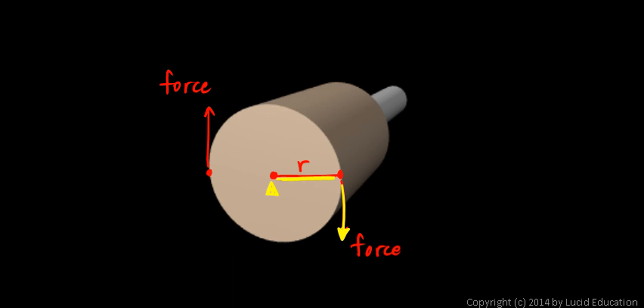And this distance here, the radius, determines how much mechanical advantage we get out of the lever. The larger the radius here, the larger the radius of the wheel, the more mechanical advantage we would have.